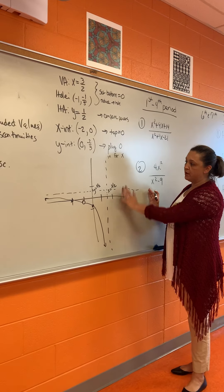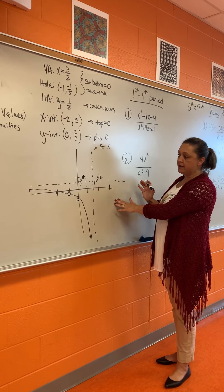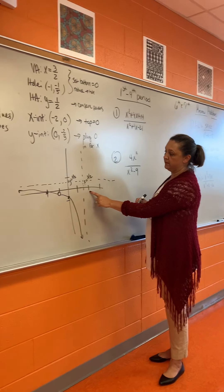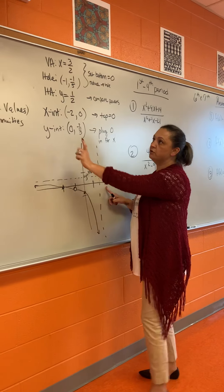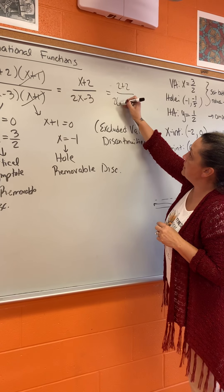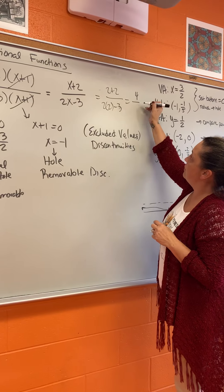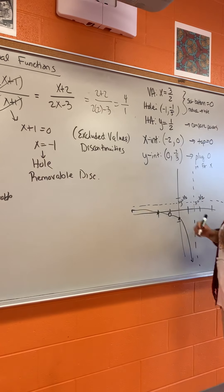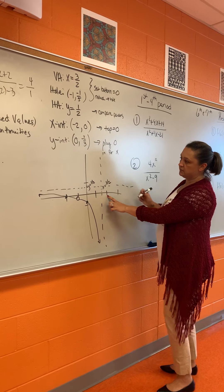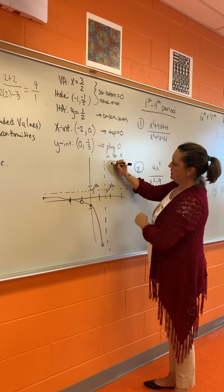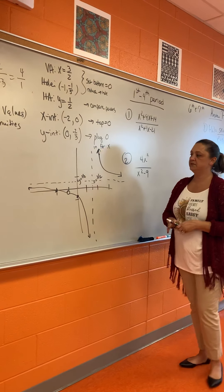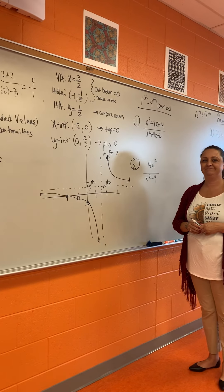On the right-hand side of the graph, we don't have any points already graphed, so we pick a test point. Let's use x = 2. Plugging 2 into the reduced function: (2 + 2) / (2·2 − 3) = 4/1 = 4. An input of 2 gives an output of 4, which is up above the horizontal asymptote. Since that point lives upstairs, the whole right-side function lives upstairs. And that's how you graph a rational function.